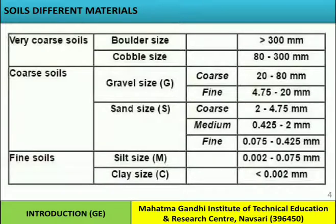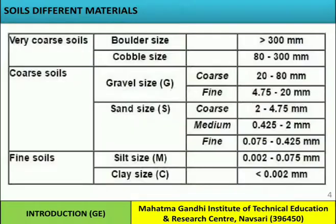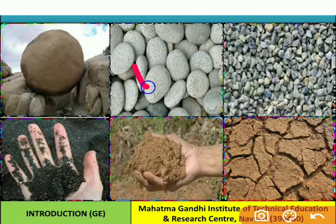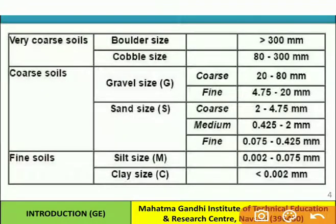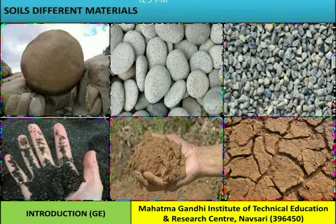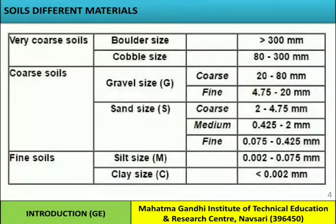In the table, I have categorized soil into three categories: very coarse soil, coarse soil, and fine soil. Very coarse soil is subdivided into cobble size and boulder size. If the size of the soil is between 80 to 300 mm, it is known as cobble size. If the size is greater than 300 mm, it is known as boulder size.